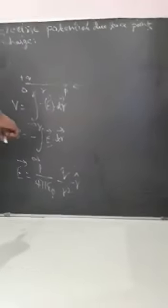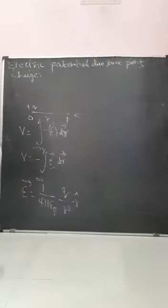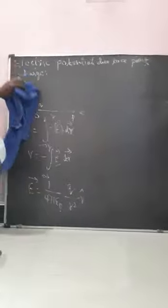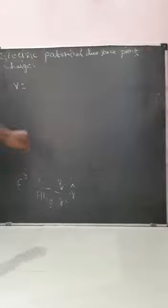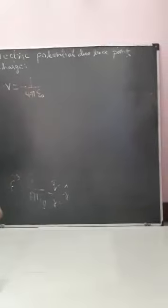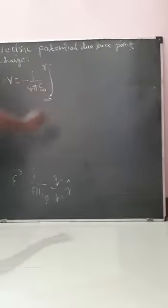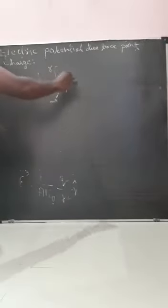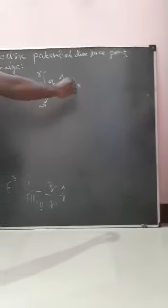From this equation, you are going to substitute this E value into the potential expression. If you substitute, then you will get: V is equal to minus 1 by 4 pi epsilon naught, with limits infinity to R, then Q by R squared into R cap into dr vector.